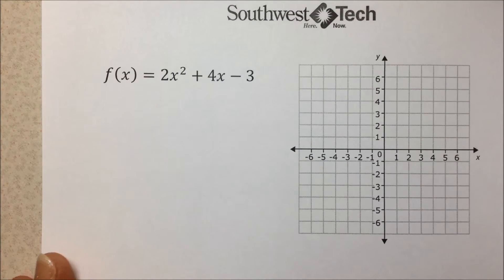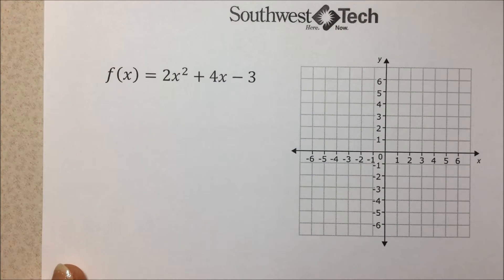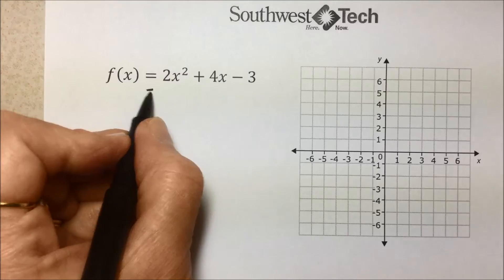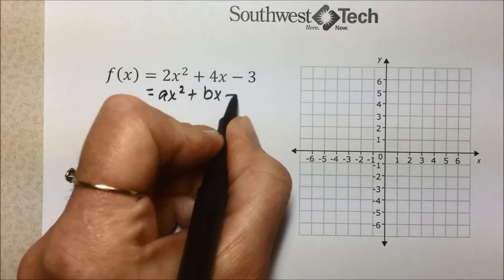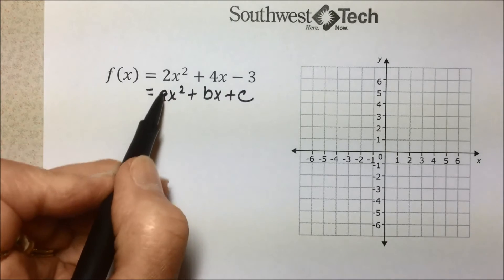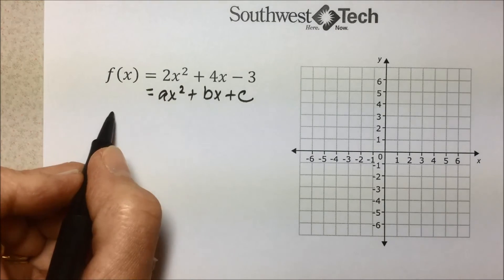Let's look at another problem that's asking the same information. Find the axis of symmetry, vertex, and the shape of it as well as graphing it. So comparing this, ax² + bx + c, we have a of 2, b of 4, c of -3.